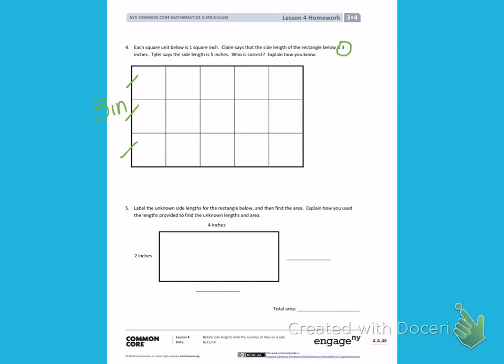Tyler thinks the side length is 5 inches. When I look at this rectangle, I see 1, 2, 3, 4, 5, which is 5 inches.